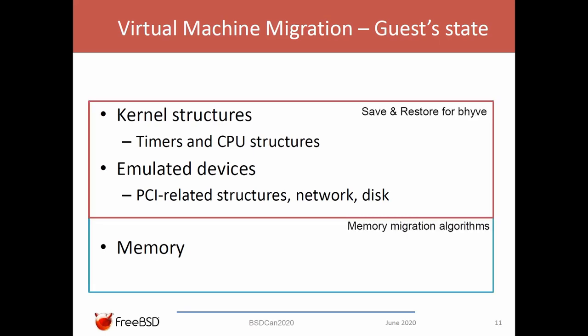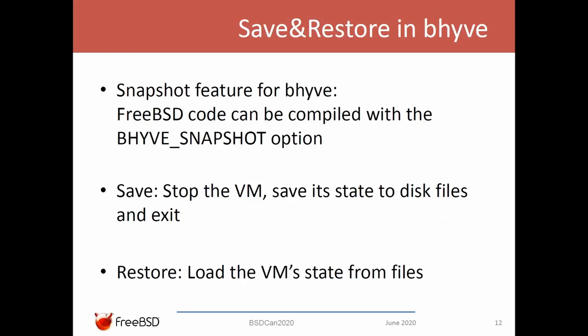In our implementation, we migrate the first two components using the save and restore feature we have implemented for Beehive. The save and restore feature was recently added to the mainstream. In order to use this feature, one should compile the FreeBSD code with the Beehive snapshot option activated.